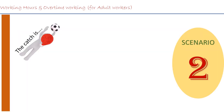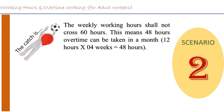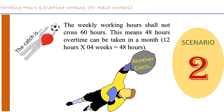The catch is that the weekly working hours shall not cross 60 hours, as per the provisions of Section 65. This is the outer ceiling available. This means 48 hours of overtime can be taken in a month — that is, 12 hours multiplied by 4 weeks gives you 48 hours of overtime per month. But don't be happy again, because there is another catch.